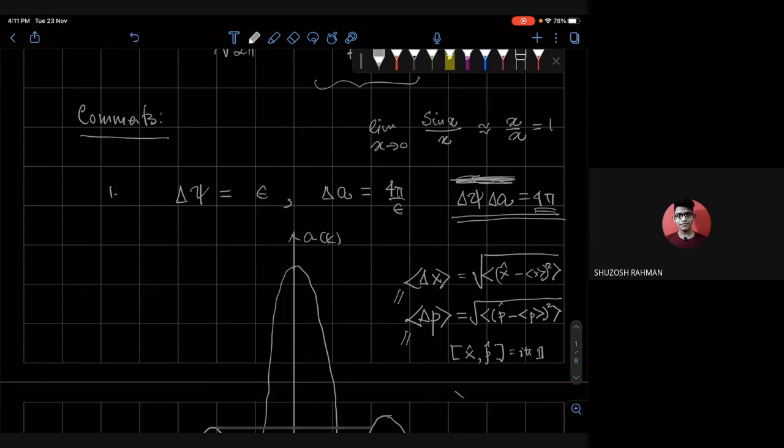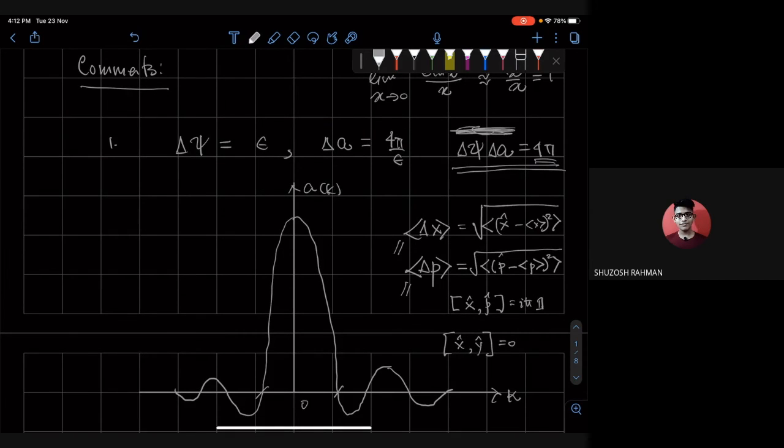If there were operators—say, position in the X direction and position in the Y direction—and they commute, then for such operators we can show that delta X times delta Y is going to be zero. So okay, yeah, you're right.